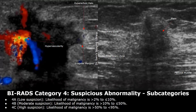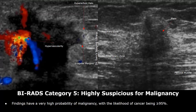4a is low suspicion — likelihood of malignancy is more than 2% and less than or equal to 10%. 4b is moderate suspicion — likelihood is greater than 10% and less than or equal to 50%. 4c is high suspicion — likelihood is more than 50% but less than 95%. BI-RADS 5 category is highly suspicious for malignancy, with likelihood of cancer being greater than or equal to 95%.